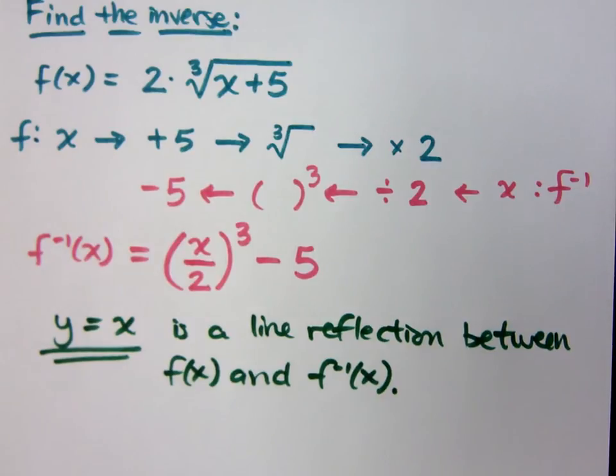That means that what you see on one side of y equals x, if you flip on the other side of y equals x, you'll see the inverse. So let's graph this so you can see what we're talking about.